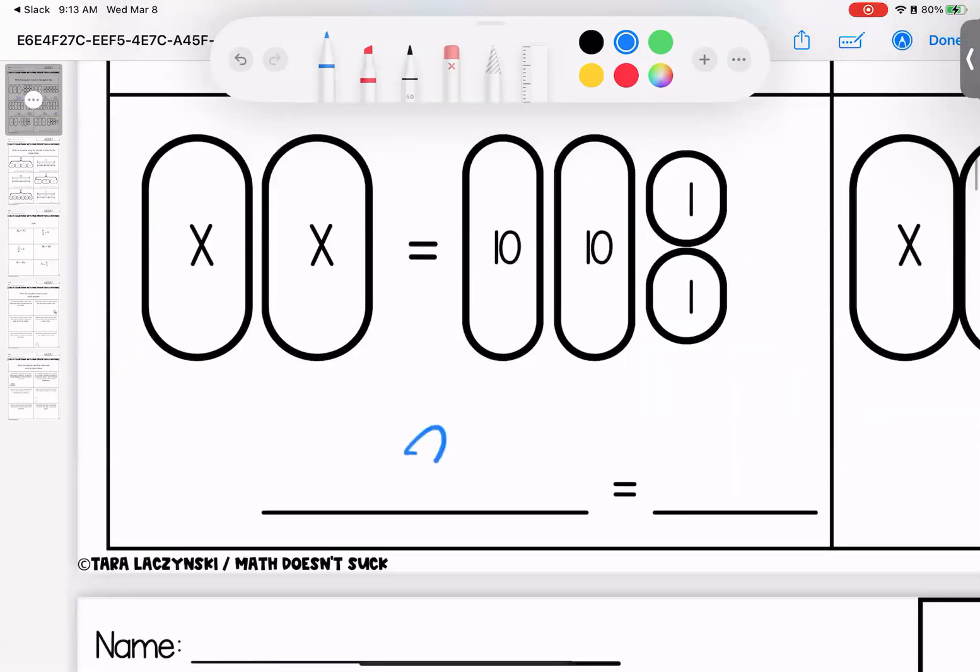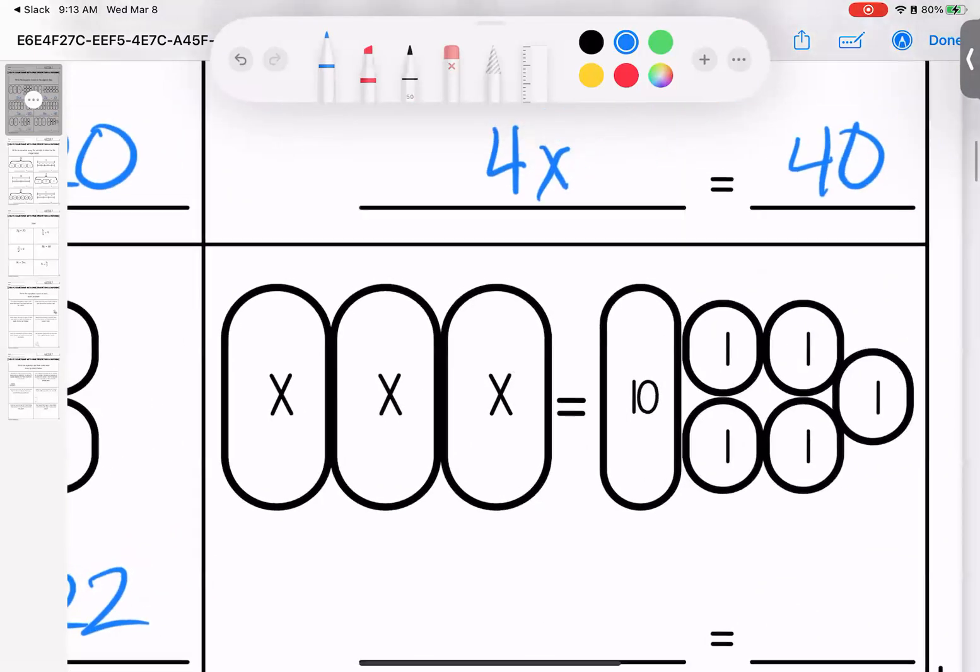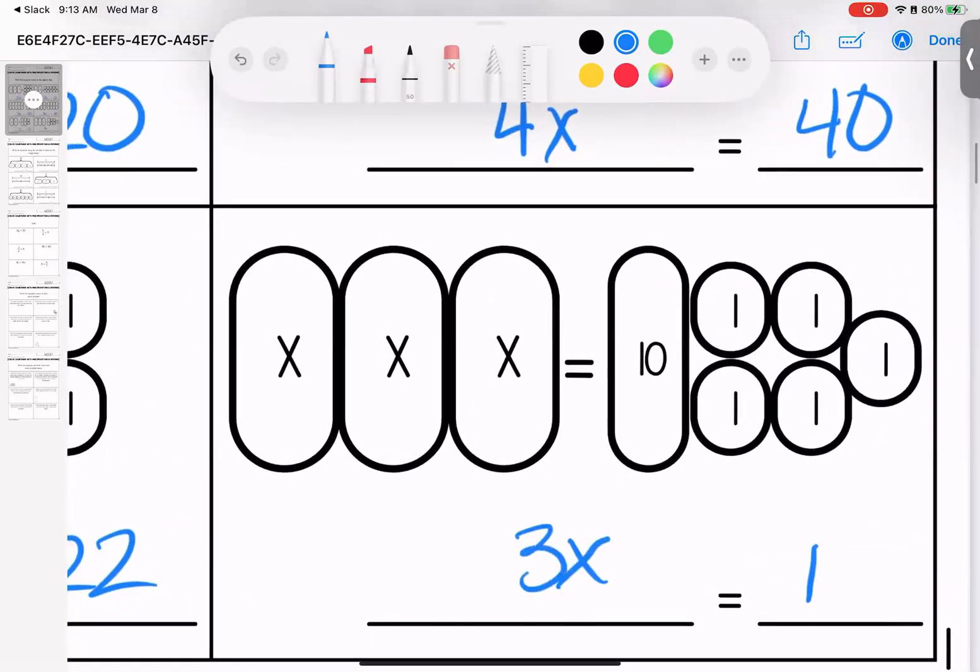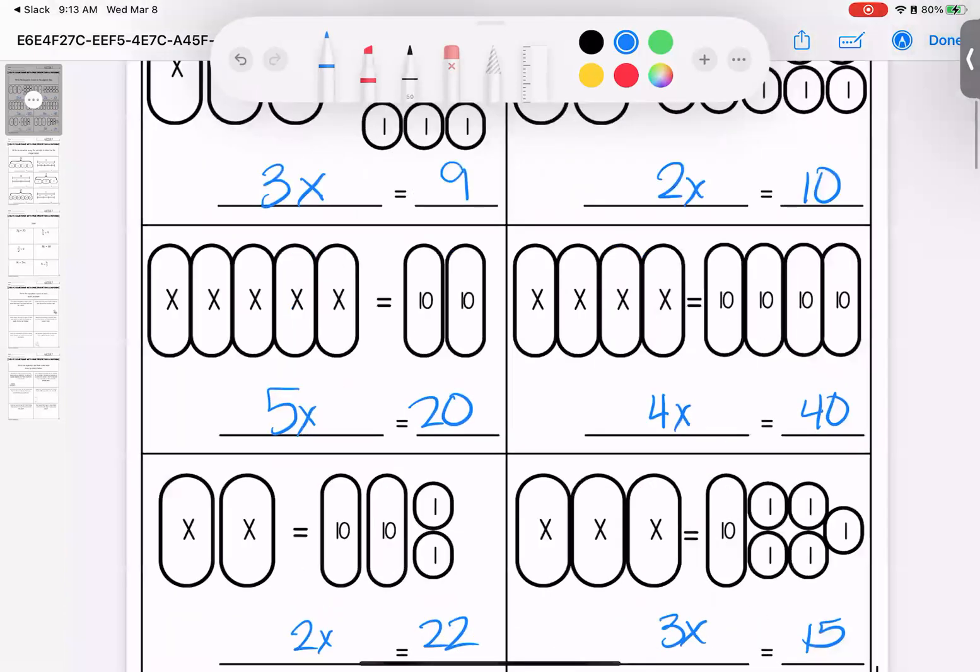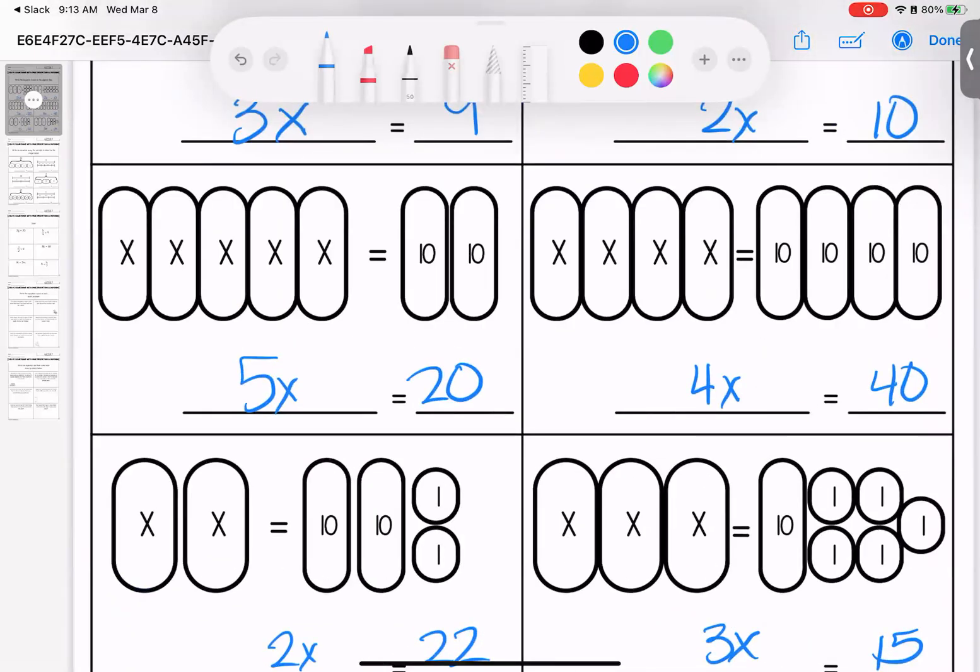I have 2x and that's equal to 22. And the last one on this page, 3x is equal to 15. Any questions with these sweet faces, please bring them with you to class.